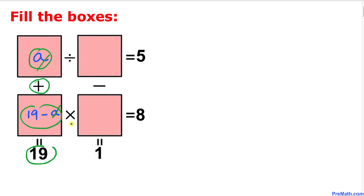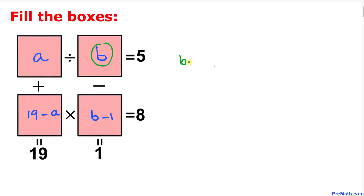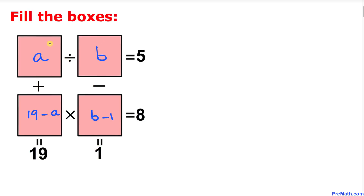Now let me call this box 'b'. We are going to fill in the next box such that b minus that value equals 1, so that box must be b minus 1. Let's verify: b minus (b minus 1) — distribute the negative — gives b minus b plus 1, which equals 1. That is correct.